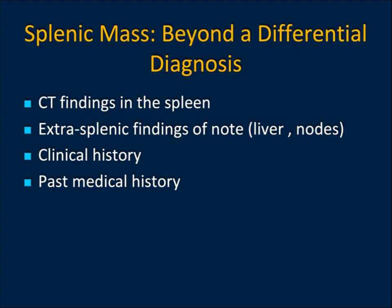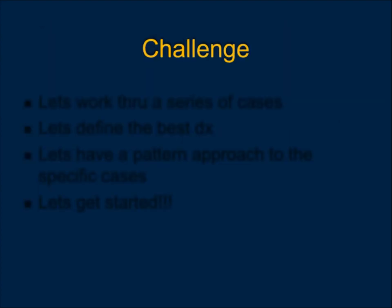When I look at a splenic lesion, I look for extra-splenic findings — does the patient have liver mets, liver nodules, adenopathy, something in the kidney? What about the clinical history — is the patient febrile, did they have endocarditis, diverticulitis? And look at past medical history: a patient with sickle cell disease may have an auto-infarcted spleen, or infarction in thalassemia, or extramedullary hematopoiesis. History becomes incredibly critical.